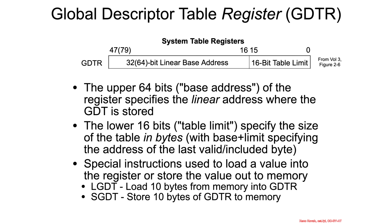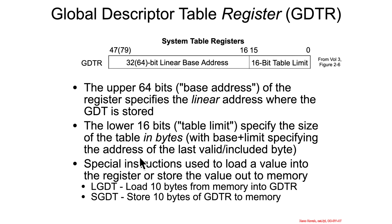The global descriptor table register (GDTR) is 10 bytes long: 2 bytes for the table limit specifying the size, and 8 bytes for a 64-bit linear base address. Since we're treating paging as non-existent for now, that linear address is effectively a physical address. The table limit field specifies the last valid byte included in the table — so if the table were 0x1000 bytes large, the limit would be set to 0xFFF, meaning the last byte is the base address plus 0xFFF.